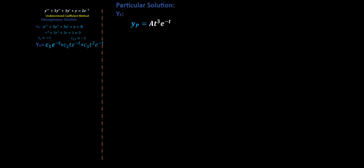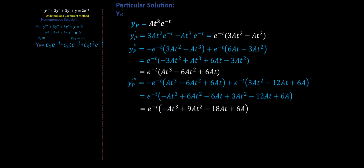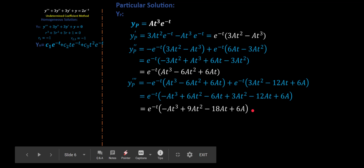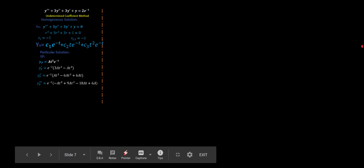The goal is to take this guess and plug it back into our ODE. Since the ODE has y, y prime, y double prime, and y triple prime, we need to find the derivatives of our guess. Using the product rule and simplification repeatedly, here is the first derivative, the second derivative, and the third derivative — each in simplified form — which I will plug back into the ODE.